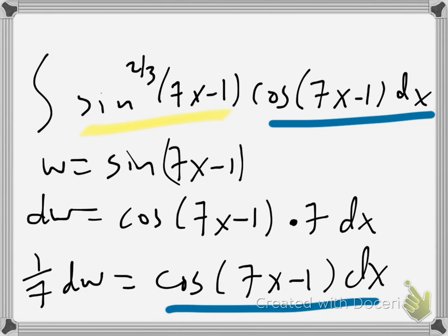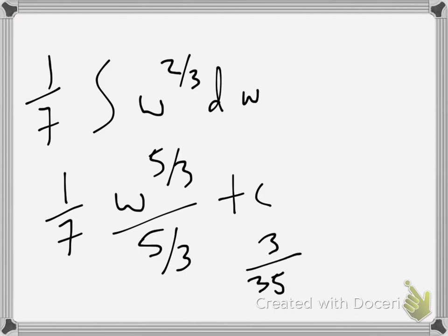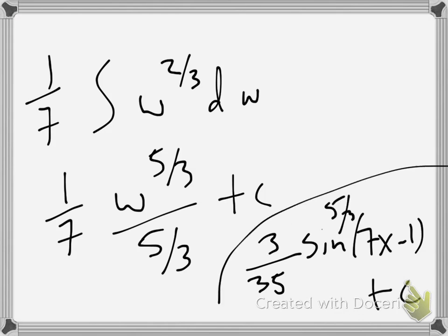So I'm going to go ahead and swap all that stuff out for one-seventh dw. And then this is just going to be w to the two-thirds. So the blue stuff is going to be one-seventh and a dw. And the yellow stuff is w to the two-thirds. So now I can do this integral. This is w to the five-thirds divided by five-thirds plus c. And then I do need to switch back. Those fractions are kind of driving me crazy. So I don't care if you leave it, but I am going to simplify it. That's three over 35. And then sine seven x minus one, and then that is to the five-thirds plus c. That's my answer there. That's number three. So that's a w substitution problem.